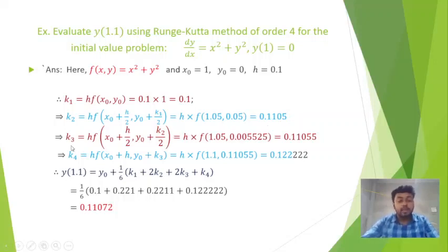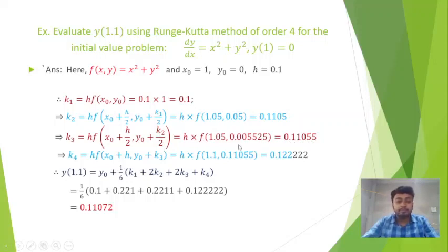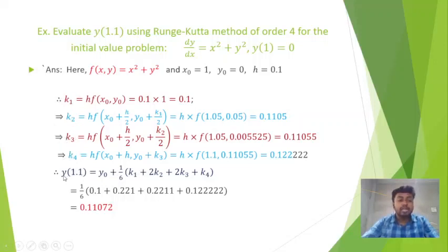Next we find k₃ using the formula h·f(x₀ + h/2, y₀ + k₂/2). Putting in all values we get k₃ = 0.1105. Finally we find k₄ using its formula and get k₄ = 0.15522. Putting all four values k₁, k₂, k₃, k₄ into the Runge-Kutta formula to find y(1.1), we get the result 0.11072. In this manner we can solve a first order differential equation using the Runge-Kutta method.